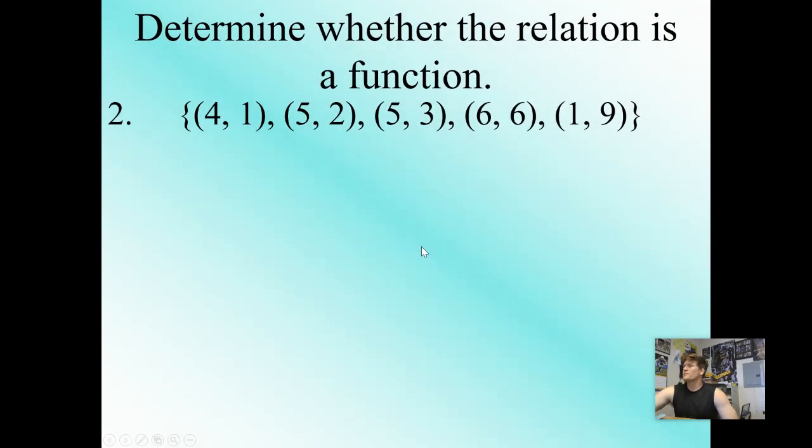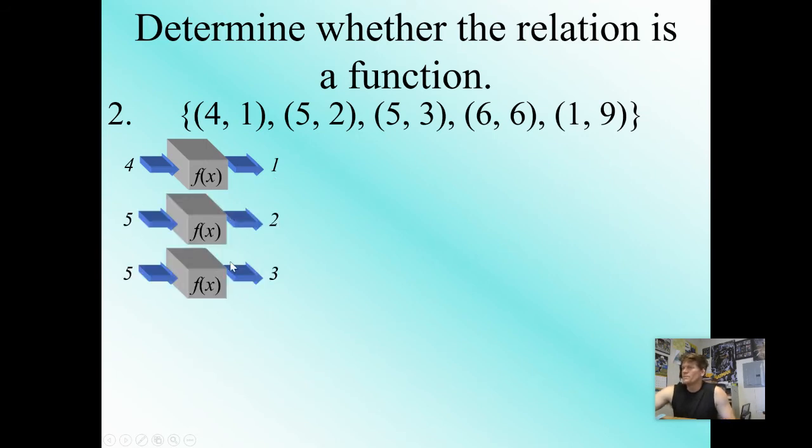Take a look at another example here. We have (4, 1), (5, 2), (5, 3), (6, 6), (1, 9). Doing the same thing, plugging in our inputs, spitting out the outputs. I have 4, which spits out a 1. 5 gives me an output of 2. 5 gives me another output of 3. There's a red flag.